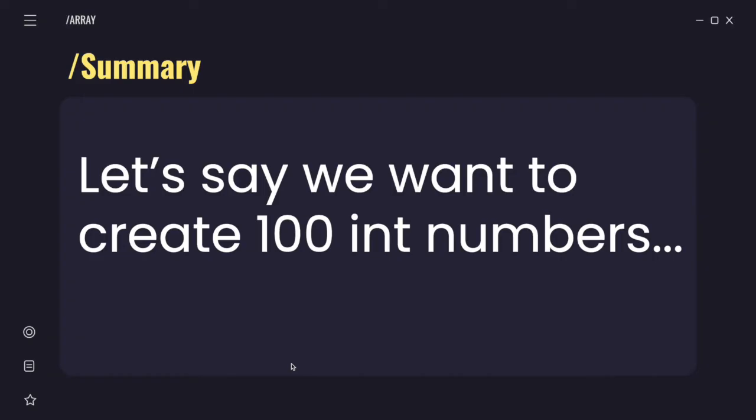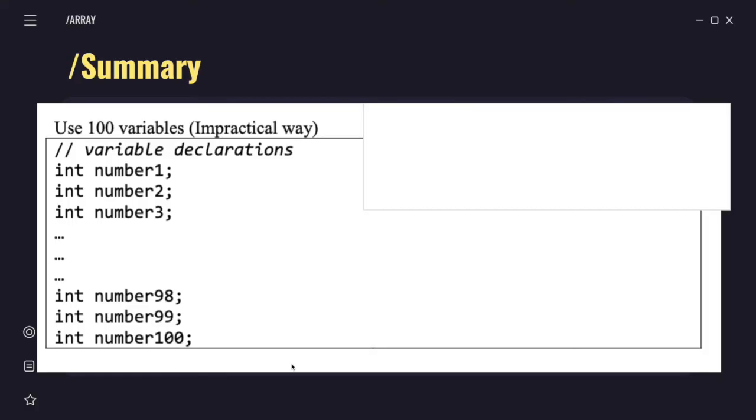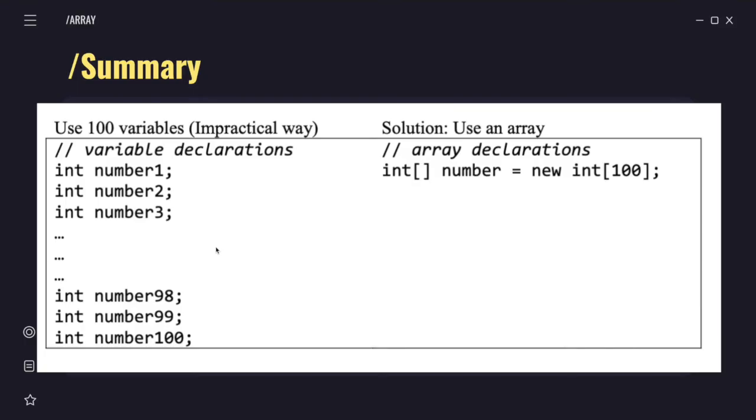So in summary, let's say we want to create 100 integer numbers. We usually follow variable declarations - we declare if we want to use 5 variables, we declare 5. So if the question asks for 100, we can't create up to 100 - it becomes impractical, right? So with the existence of arrays, it actually helps us save lines of code and make our code more efficient. So instead of creating 100 times, we only do one line. We create one array where in that array we set the array size to 100. Then it holds data type integer and we put our array name as number.